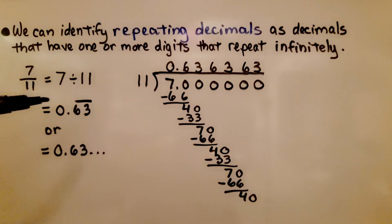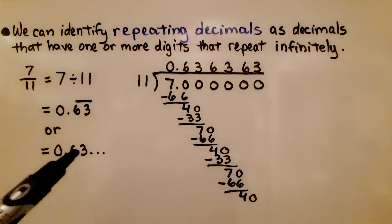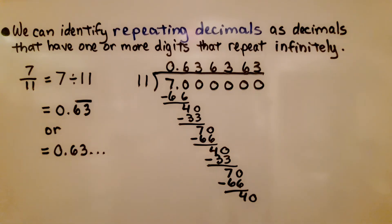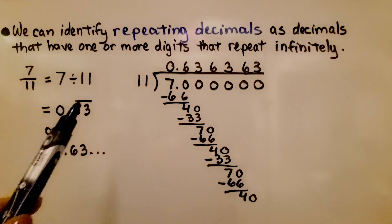So the 6 and the 3 are going to keep repeating, and we can write it as 0.63 with a bar over the 6 and the 3, or we can write it as 0.63 with an ellipsis.